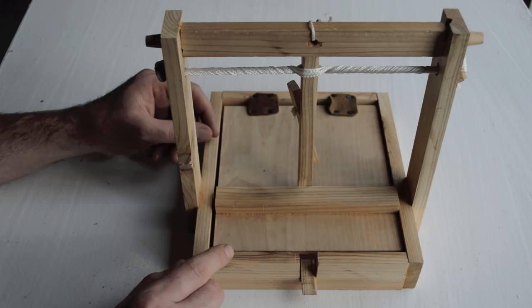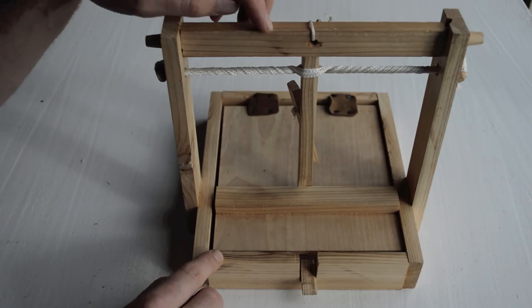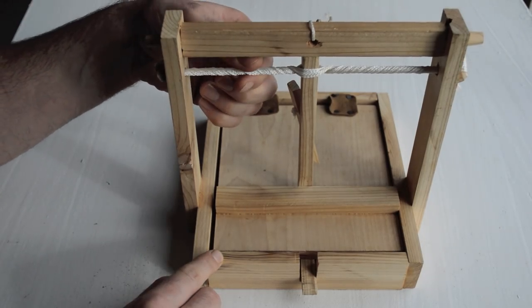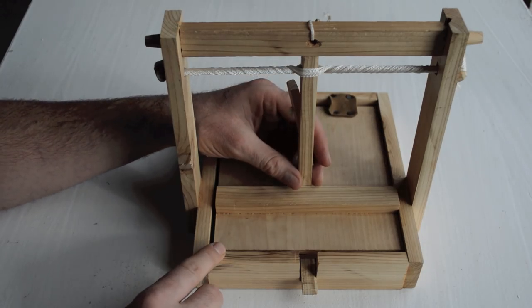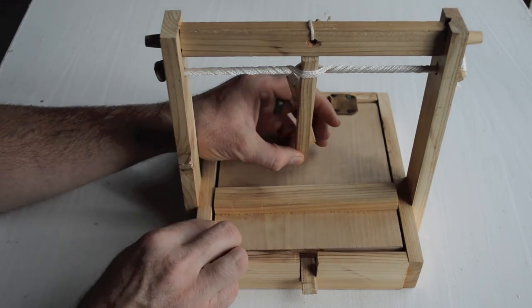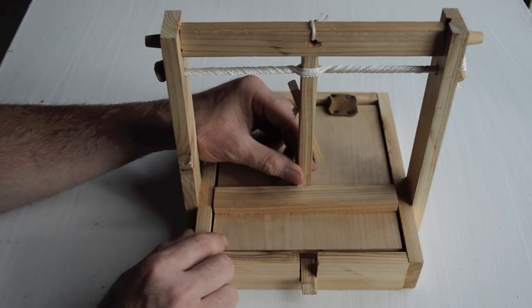The way this trap works is we have two vertical posts here with a cross piece, and in between here we have some twisted rope, and right in the middle we have a little stick or rod. Now this has tension on the rope. When you pull it back, it wants to slam forward. So that's what provides the force for this trap.